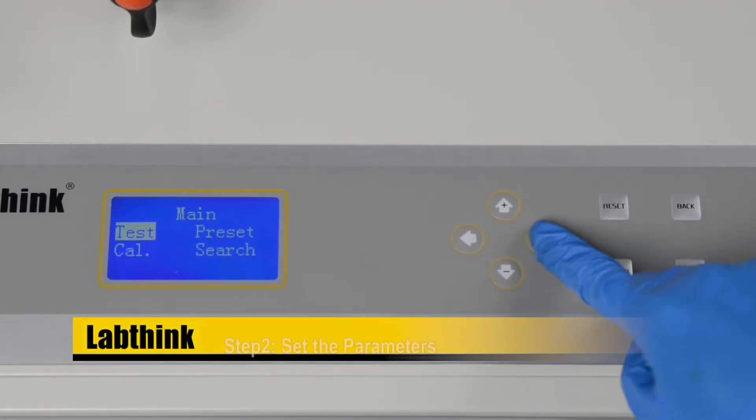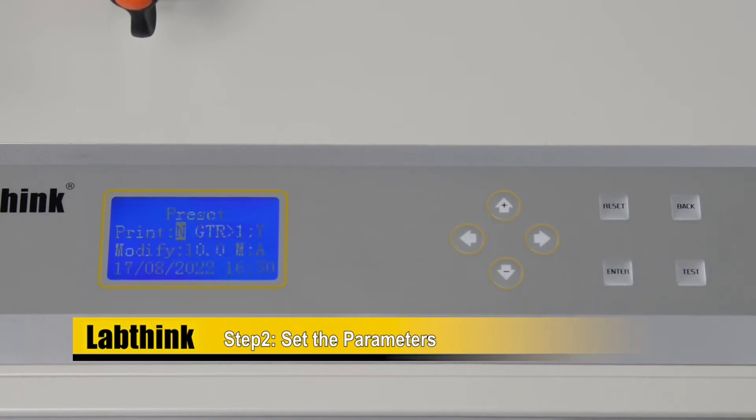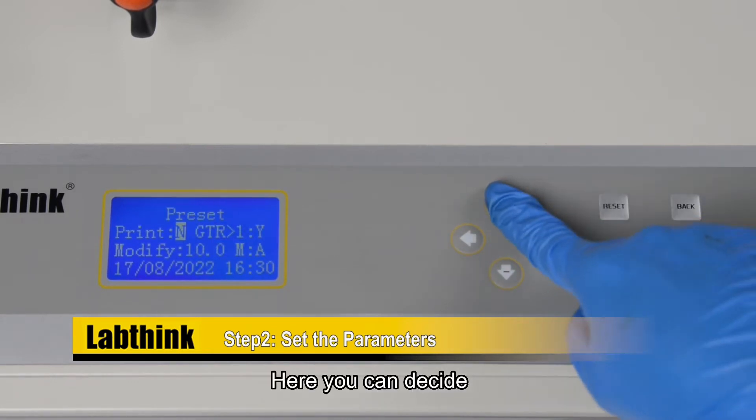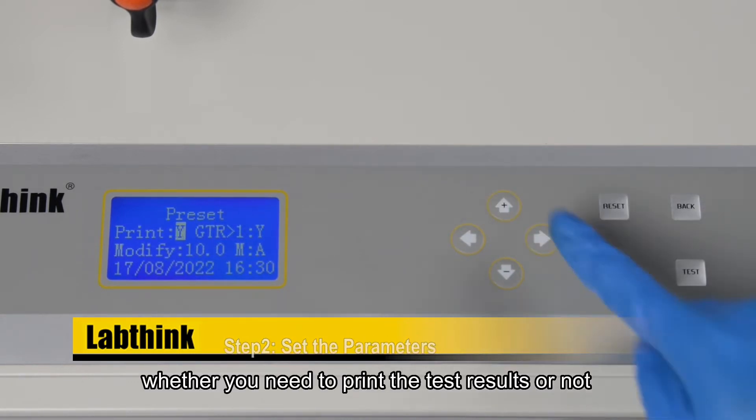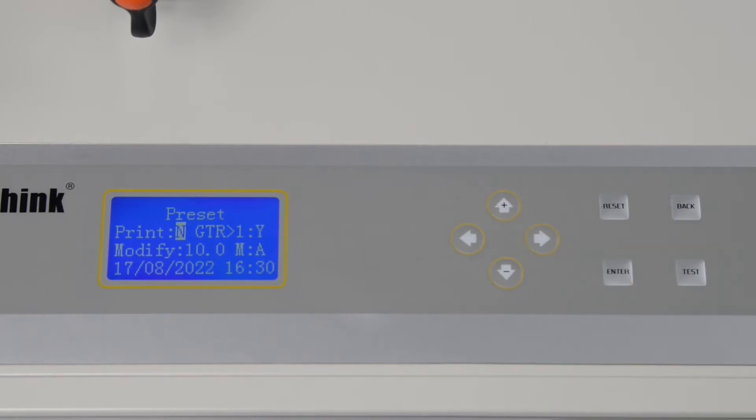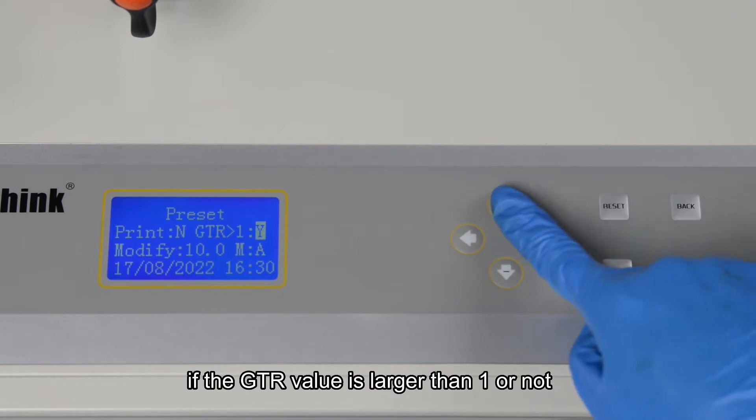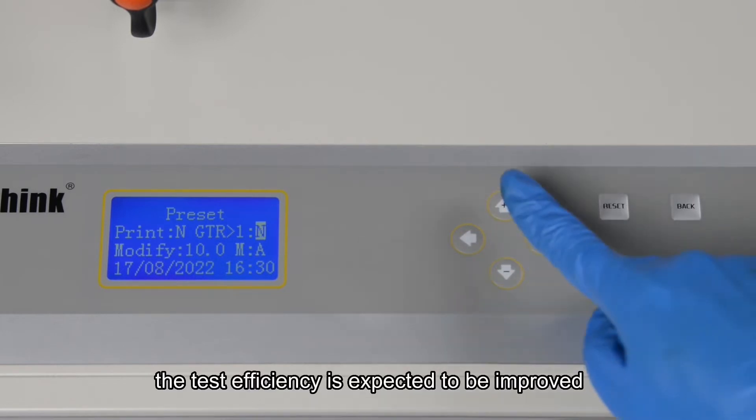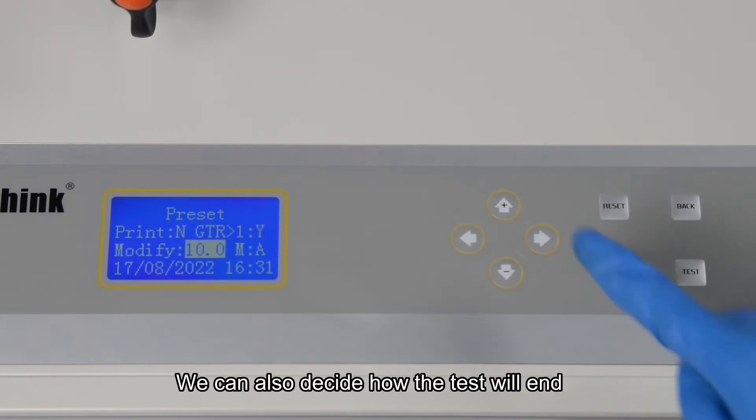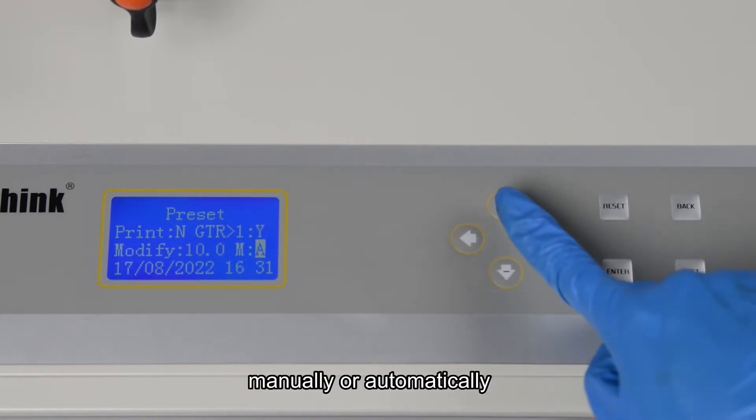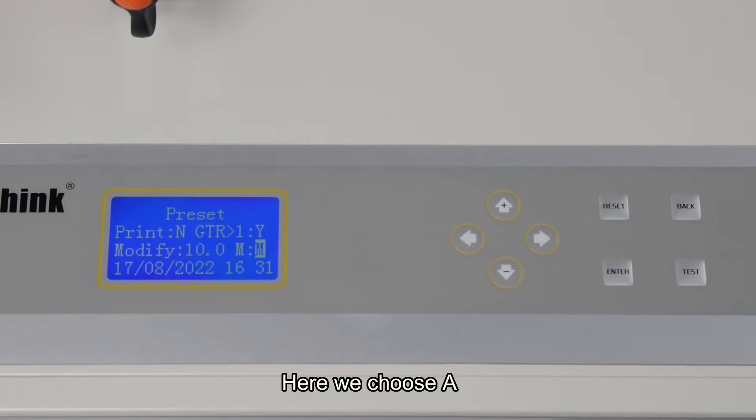Step 2: Set the parameters. Here you can decide whether you need to print the test results or not. By pre-determining if the GTR value is larger than 1 or not, the test efficiency is expected to be improved. We can also decide how the test will end, manually or automatically. Here we choose A, which is automatically.